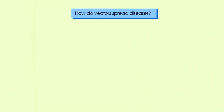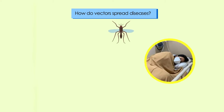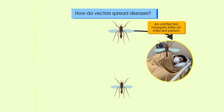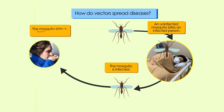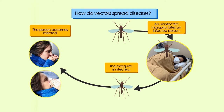Here is another example of how vectors spread diseases. First, an uninfected mosquito bites an infected person and becomes infected. This mosquito then bites a healthy person. When this happens, the virus is transmitted from the mosquito to the person, and this person then becomes infected.